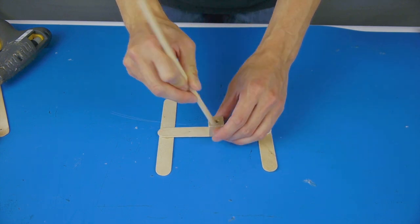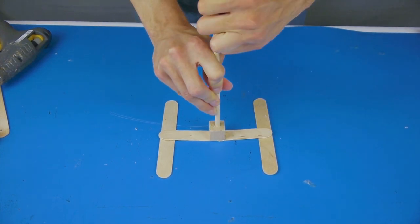The base starts with three craft sticks in an H shape, the cube, and the dowel.